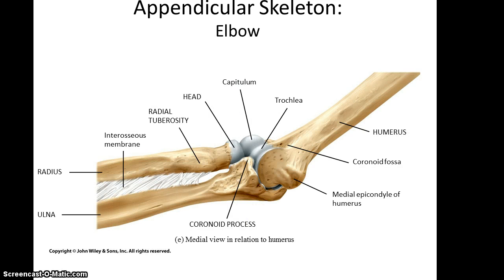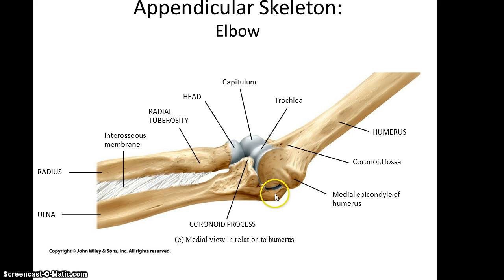If we take a look at an elbow, where you have the humerus articulating with the ulna and the radius, you see that the trochlear notch of the ulna is going to be articulating with the trochlea of the humerus, and the head of the radius is going to be articulating with the capitulum.